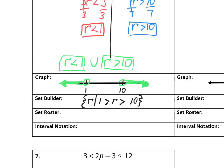A set roster is just a list of numbers included in this number set. The first part includes all numbers less than 1, not including 1, so I write a few numbers leading up to that — negative 2, negative 1, and 0 — with dot dot dot showing they continue to the left. On the right side, all numbers greater than 10: I start with 11, 12, 13, and so on all the way to positive infinity.